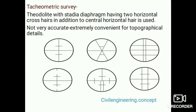In tachometric survey, the theodolite is used with a stadia diaphragm having two horizontal crosshairs in addition to the central horizontal hair. It is not very accurate but is extremely convenient for obtaining topographical details.